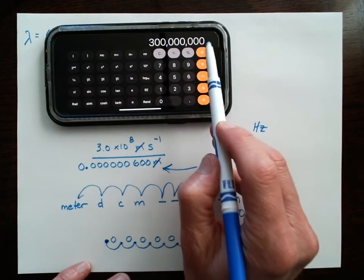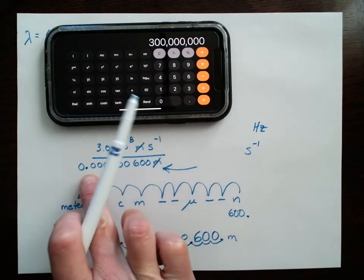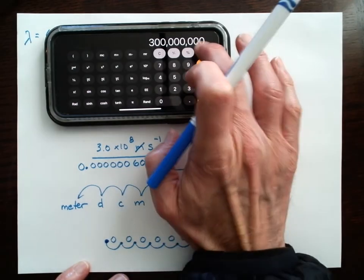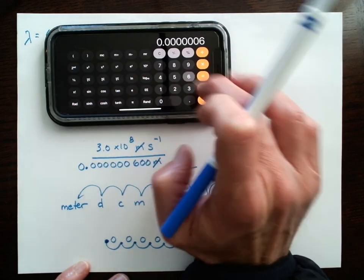Let's hit equal. And there it is, right? I have 3 times 10 to the 8th. 1, 2, 3, 4, 5, 6, 7, 8. And I'm going to divide this by 0 point 6 zeros and then a 6. So divide it by 0.000000600.